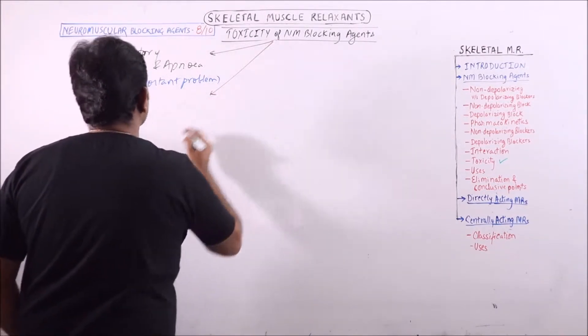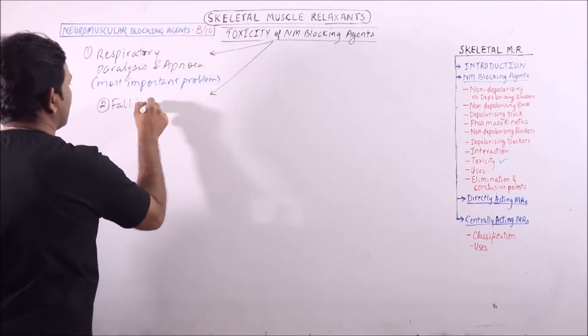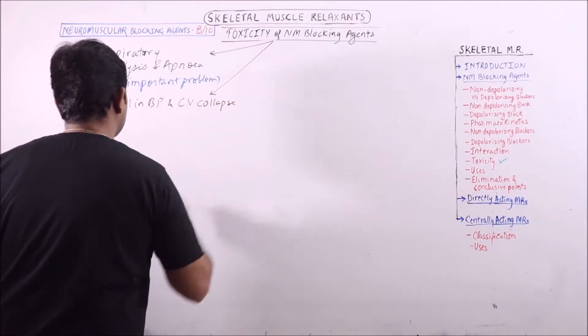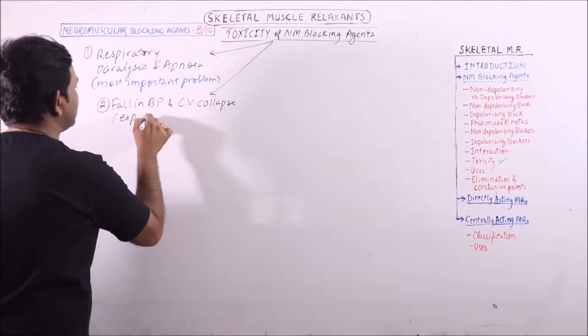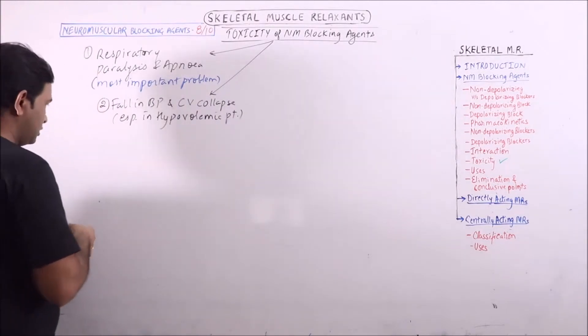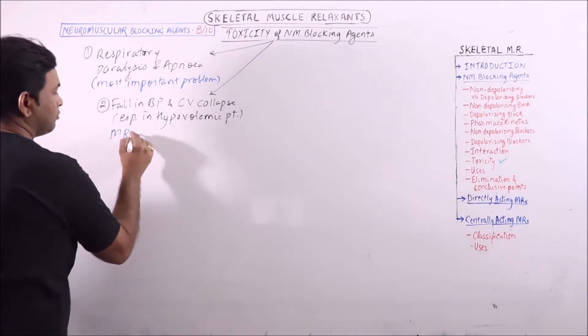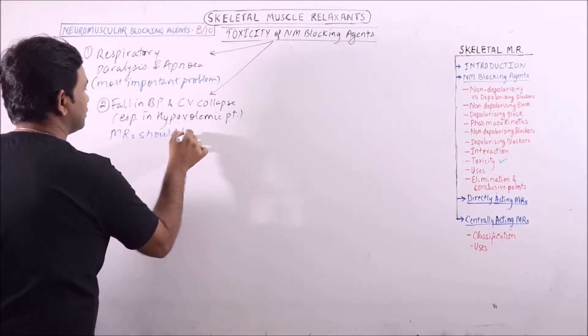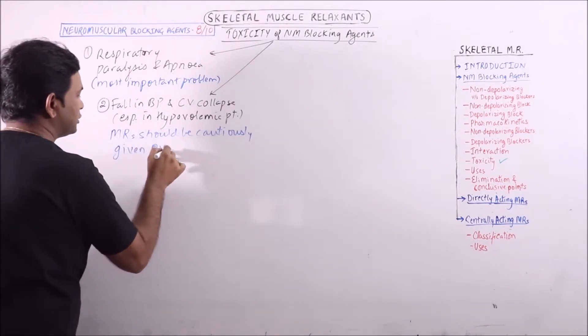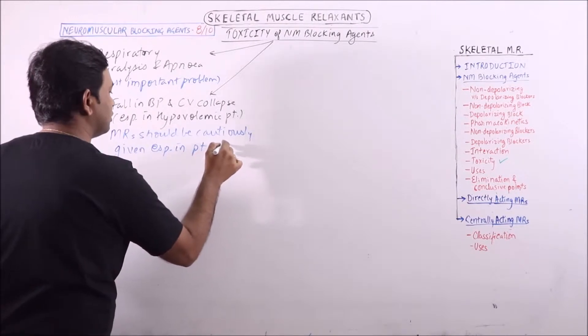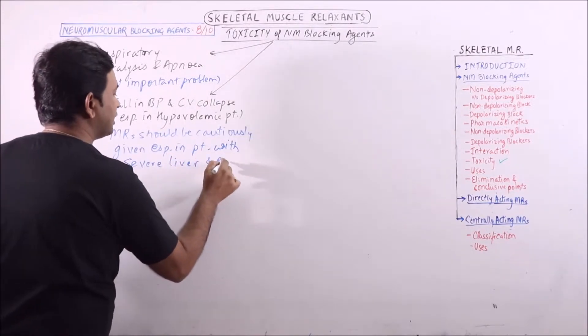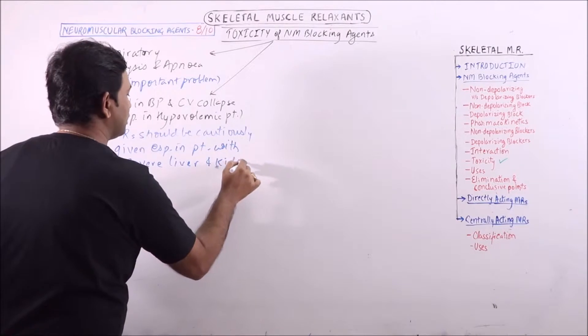Another one is fall in blood pressure and cardiovascular collapse, especially in hypovolumic patients. So it is very important to note that muscle relaxants should be cautiously given especially in patients with severe liver and kidney diseases.